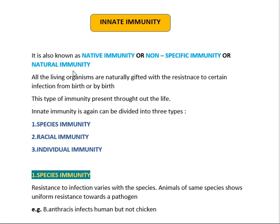It's important to learn these synonyms — innate immunity, natural immunity, non-specific immunity — because in examinations you may encounter any of these names. This natural immunity is present throughout life, from birth until death. Innate immunity is classified into three types: species immunity, racial immunity, and individual immunity.